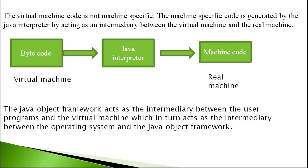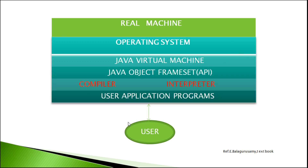We have a diagram. If we have a user, we have a program with a real machine. In the real machine, there is an operating system. Now, if the user is using the application program, in the application program you can use the compiler and interpreter.